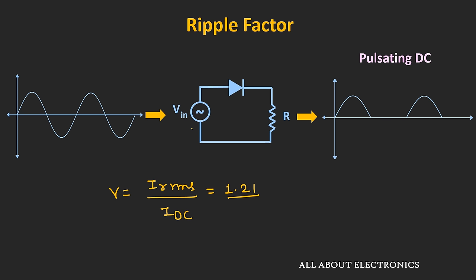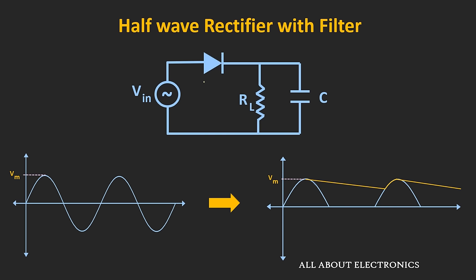Now the ripple in the output waveform can be reduced by using a filter circuit. Just by connecting a capacitor across this load, we can reduce the ripple in the output waveform. Let's understand how this circuit will reduce the ripple. Assuming the diode is an ideal diode: during the positive half cycle, whenever the applied input voltage across the diode is positive, this diode will get forward biased and will act as a closed switch. Through this diode, this capacitor will get charged up to the peak voltage of Vm.